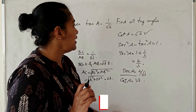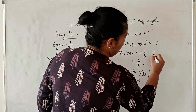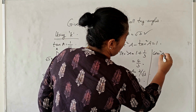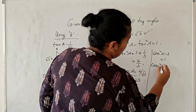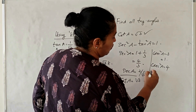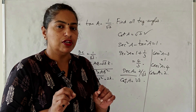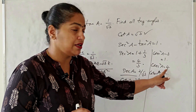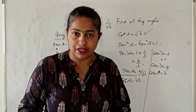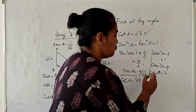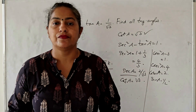Now using cot a = √3 and the identity cosec²a - cot²a = 1, we get cosec²a = 1 + cot²a = 1 + 3 = 4, so cosec a = 2. Again, only the positive square root. We have now found the values of all the trigonometric ratios. Since cosec a = 2, sin a = 1/2.